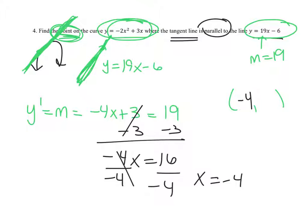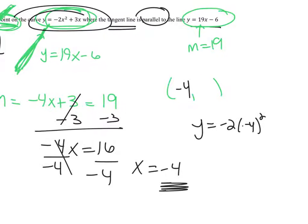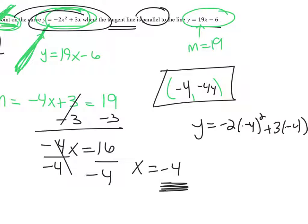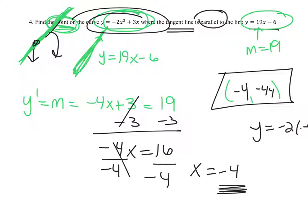That x value goes into the original function to find y. Plugging in x equals negative 4: y equals negative 2 times (negative 4) squared plus 3 times (negative 4). That's negative 2 times 16, which is negative 32, plus negative 12, giving y equals negative 44. So the point on the parabola with a tangent line parallel to the given line is (negative 4, negative 44).